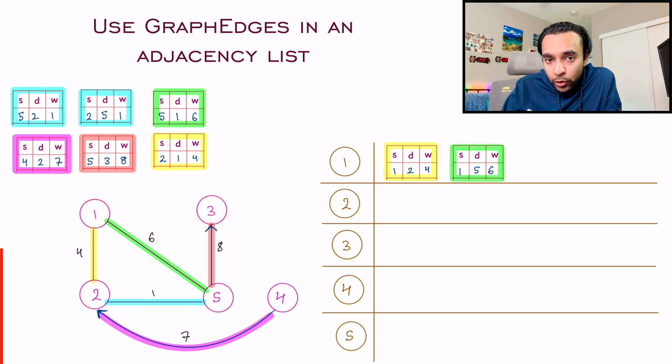What about node two now? Node two has two undirected edges and one directed edge. But this edge is from node four to node two, and not the other way around. So put all the edge objects over here now.